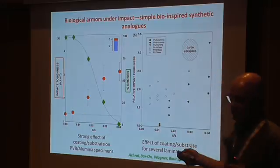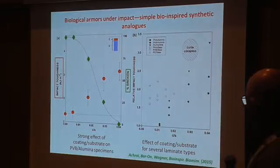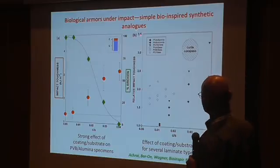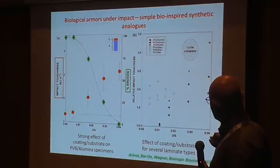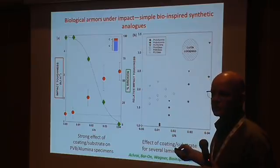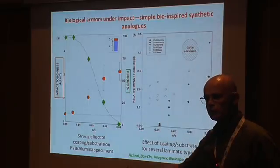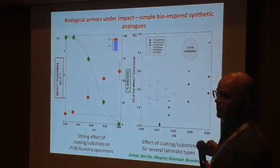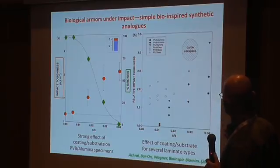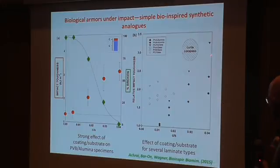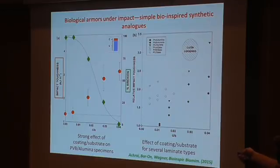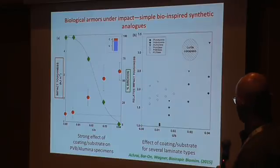Since this is a bio-inspired approach, we have prepared specimens of various polymers with alumina layers. We used PVB — polyvinyl butyral, the material in car windshields that keeps glass together on impact — and also alumina and glass. The results are quite good, but the natural tortoise carapace still outperforms whatever we have been able to prepare so far.